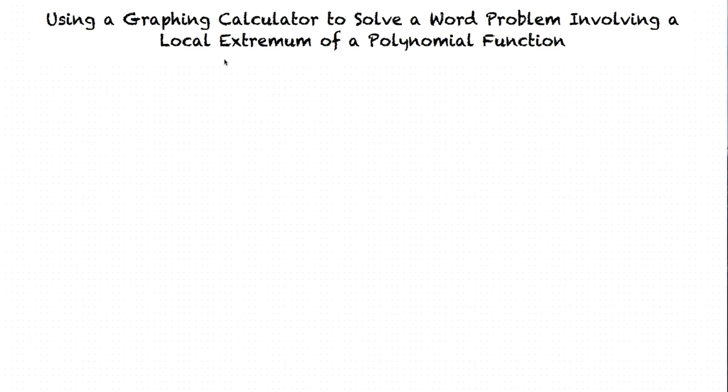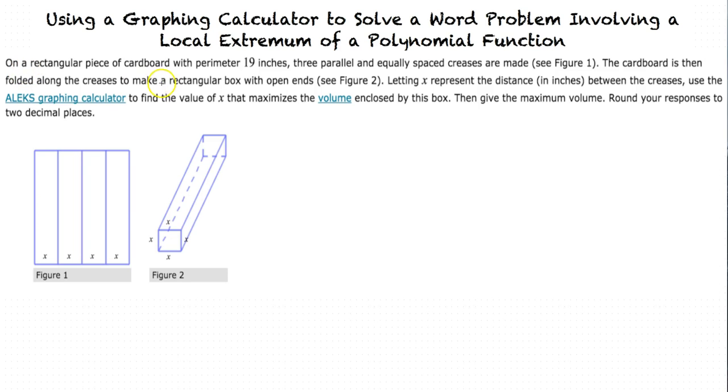Let's look at an example problem. On a rectangular piece of cardboard with perimeter 19 inches, three parallel and equally spaced creases are made. The cardboard is then folded along the creases to make a rectangular box with open ends.